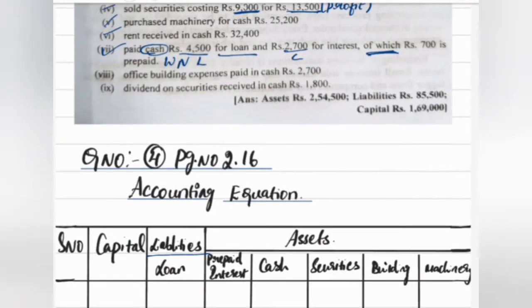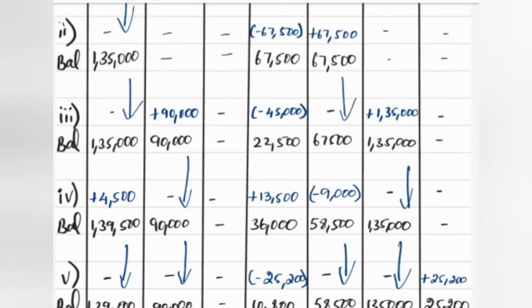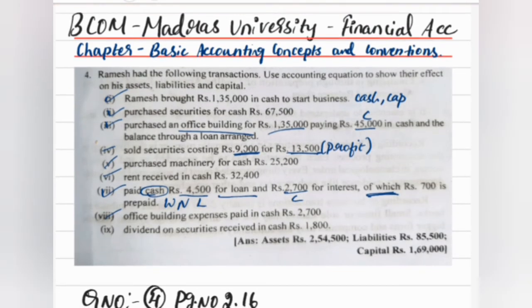Next: office building expenses paid in cash — this is an expense, so it goes to capital as minus ₹2,700.